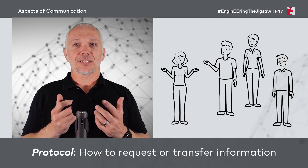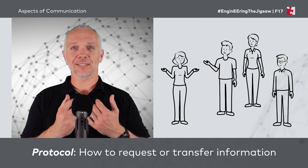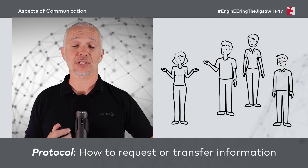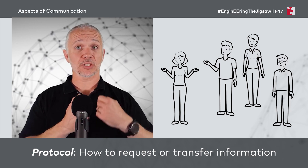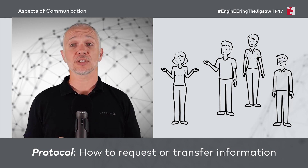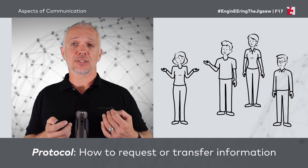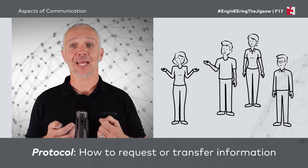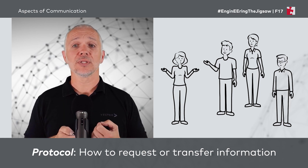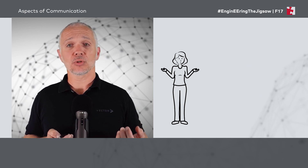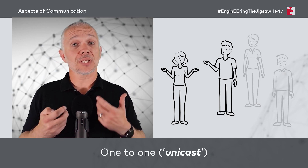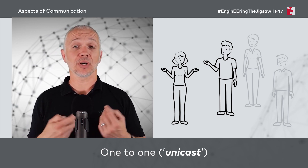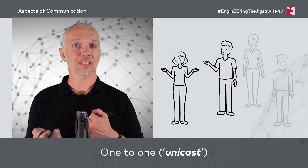A protocol is simply a formalized way that we might want to request or transfer information. Whether we realize it or not, we make use of protocols in our human interactions. Within a group of people, if we want to talk to one person, we'll use their name to denote that we want to talk to just them. In networking terms, this is called a unicast — 'uni' as in single or one.